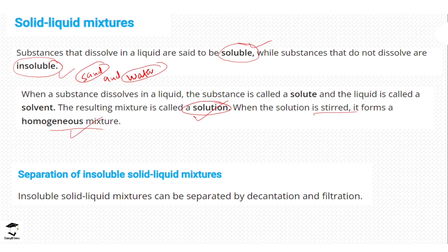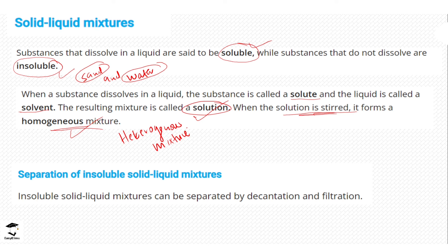Today we are looking at solid-liquid mixtures where the solid does not dissolve in the liquid — where the solute is insoluble in the solvent. An example is sand and water. If you stir sand and water, it is not going to form a homogeneous mixture; it is going to form a heterogeneous mixture. This is what we are discussing today: separation of insoluble solid-liquid mixtures.